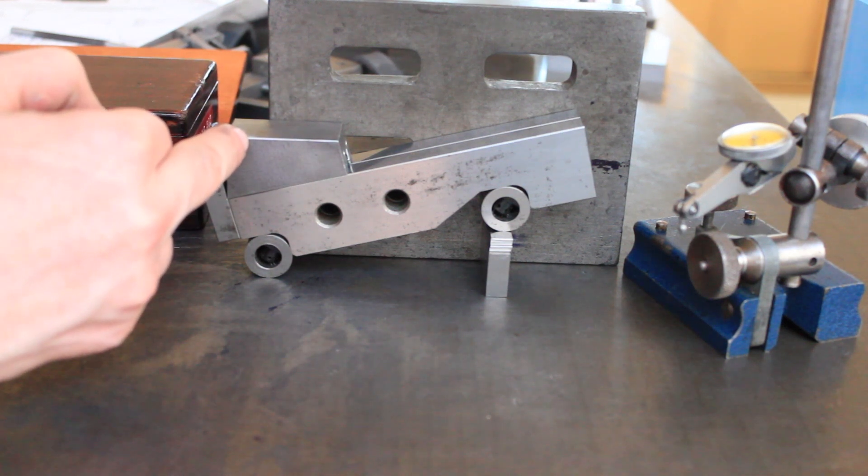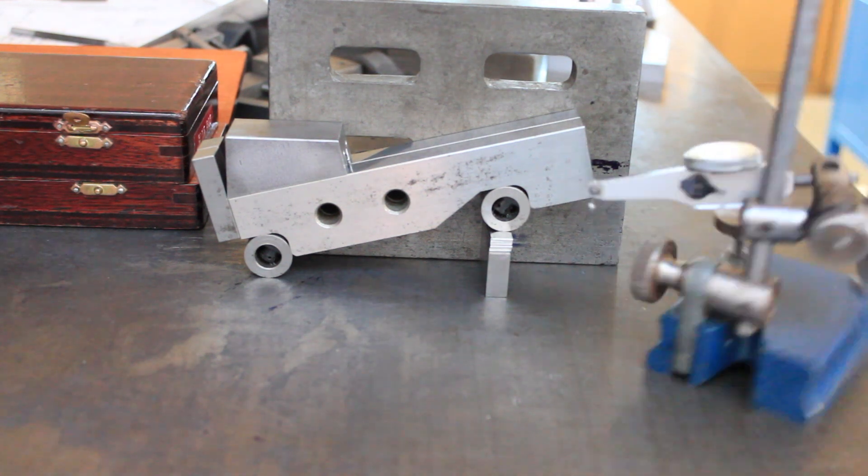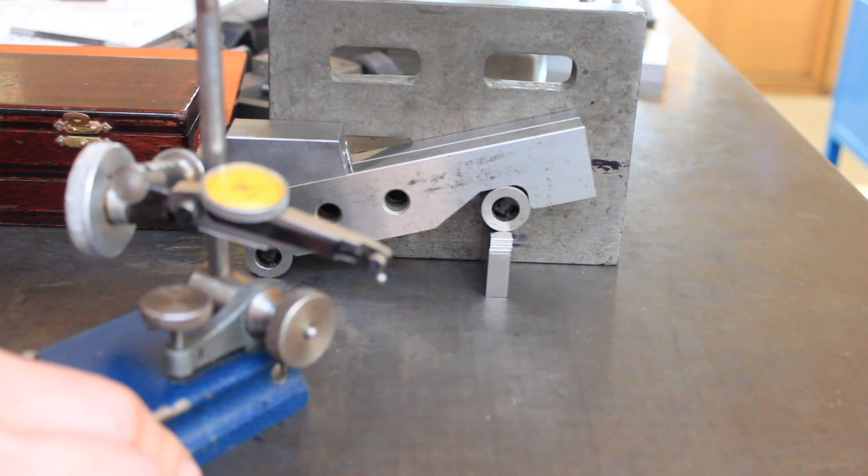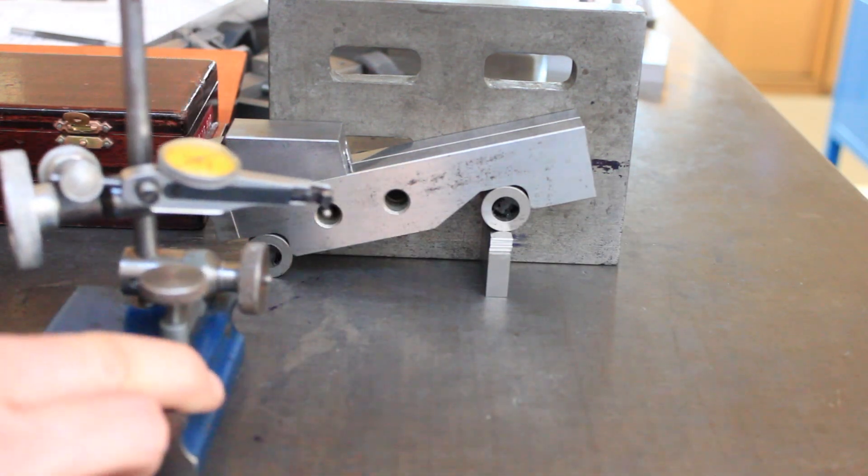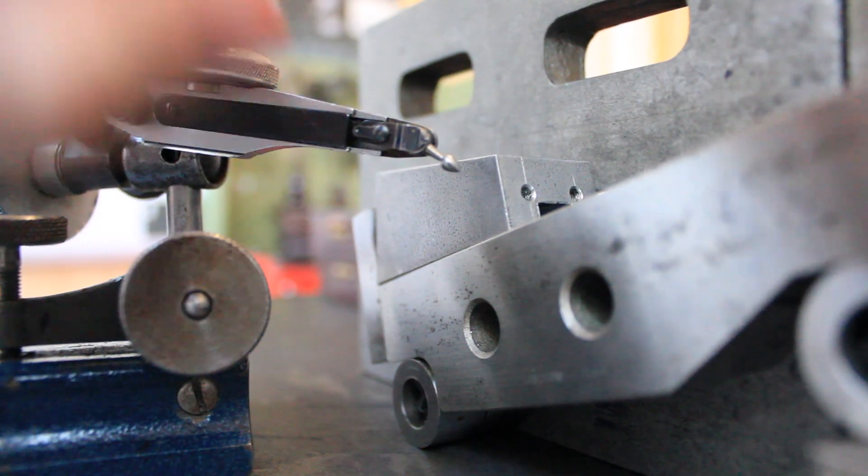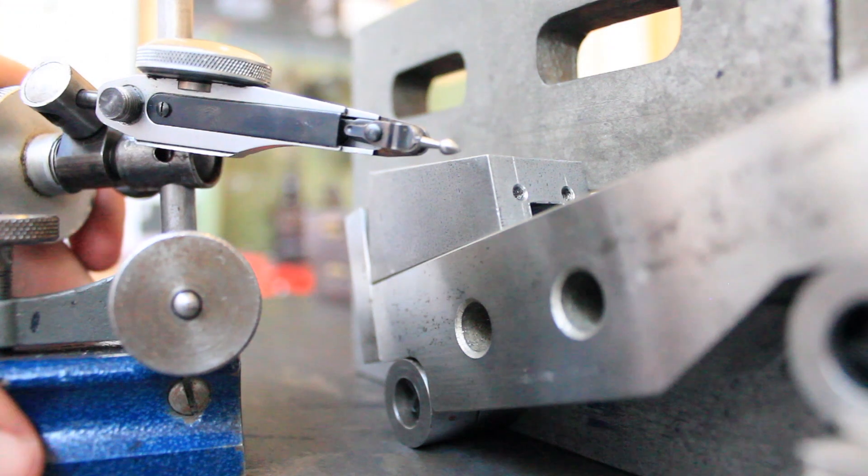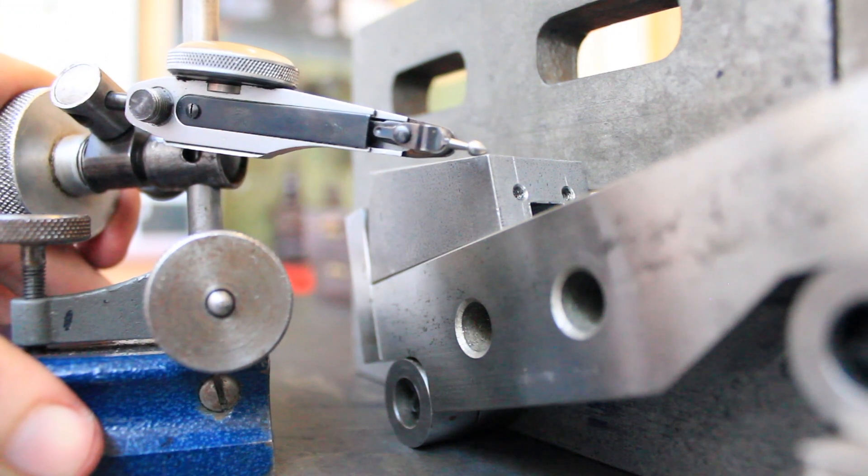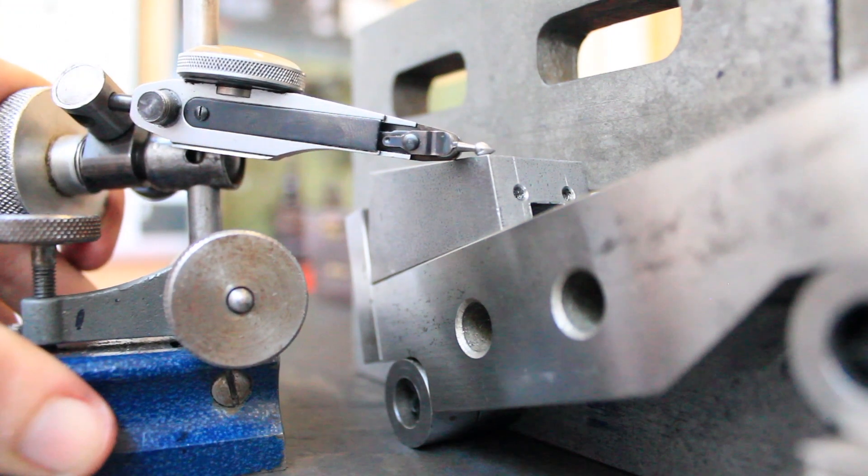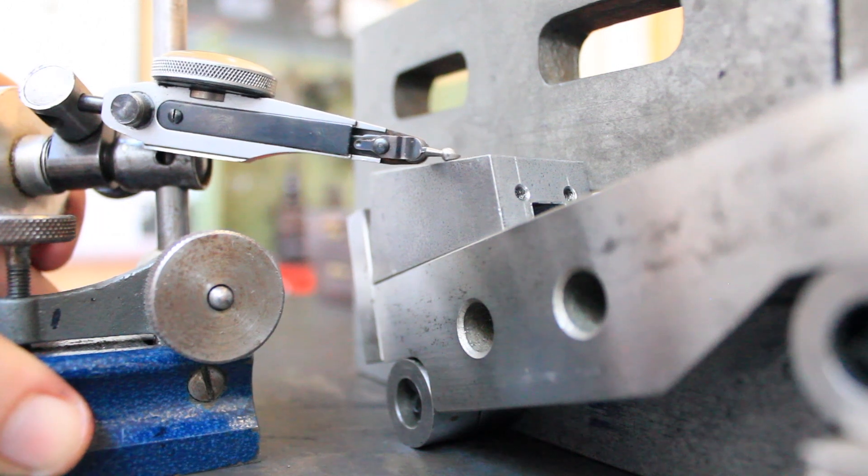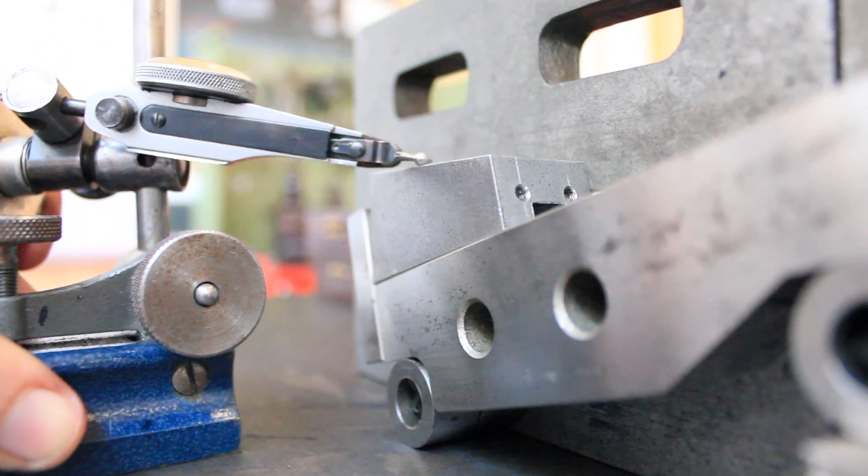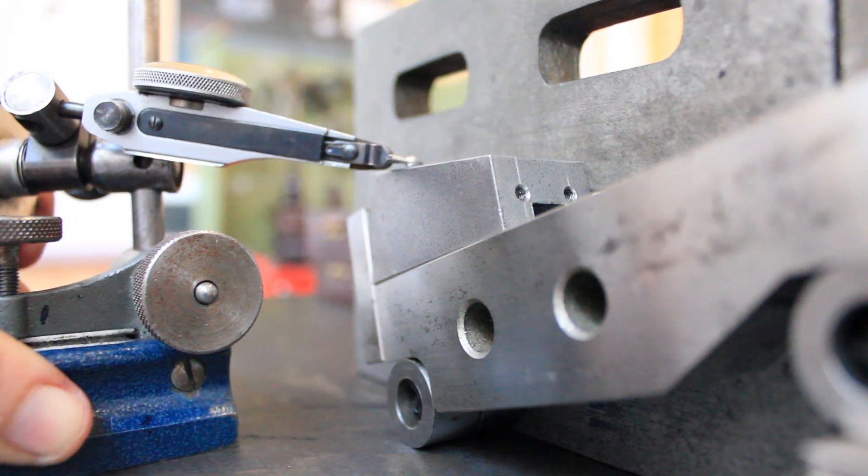So we need to line up our DTI so that the finger is roughly at an angle of 20 degrees or so when we first start. That way, when it makes contact with the block, it's near enough horizontal, and that's going to reduce sine error. Then we can move it back and forth. Once we're happy that it's in correct contact, we can zero out the gauge for a setting.